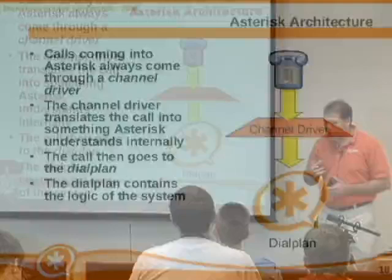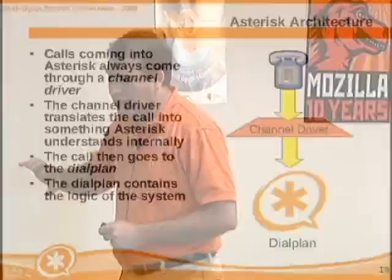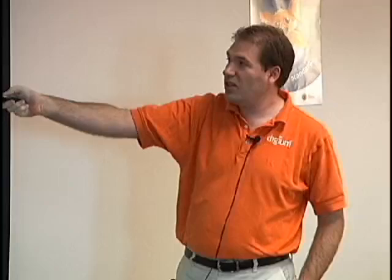Before we get too far into the dial plan, let's talk about the overall architecture of Asterisk. One of the most important pieces is something called a channel driver. A channel driver converts signaling from one telephony protocol into something Asterisk can understand. We have a ZAP channel driver that handles analog and T1, and a SIP channel driver for the SIP protocol. A phone call comes through that channel driver, gets converted into Asterisk's internal call representation, and then comes into something called the dial plan, which controls the logic of the system.